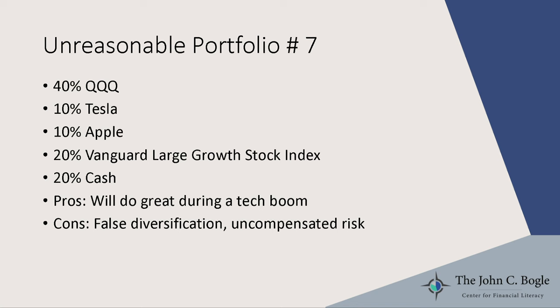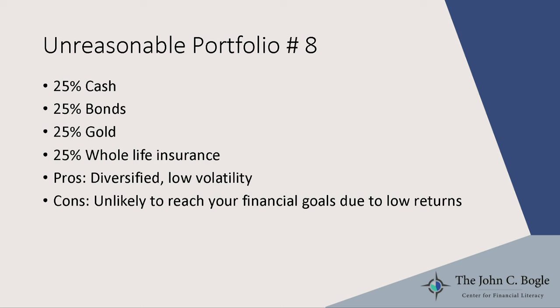How about 40 percent in QQQ, 10 in Tesla, 10 in Apple, 20 in Vanguard large growth stock index, and 20 in cash? The problem is this person thinks they're diversified, but each of their holdings is actually owning the same stocks — it's false diversification, with uncompensated risk from individual companies. Not reasonable.